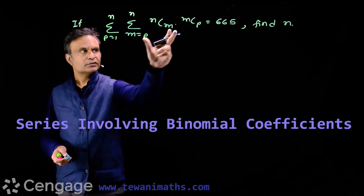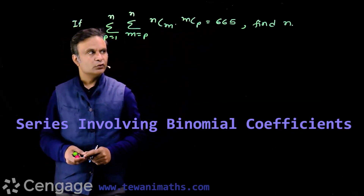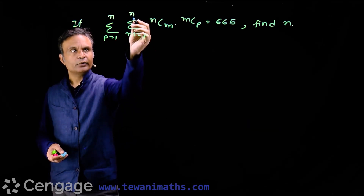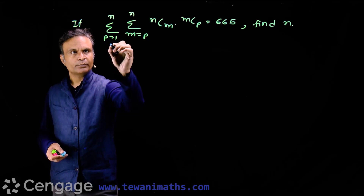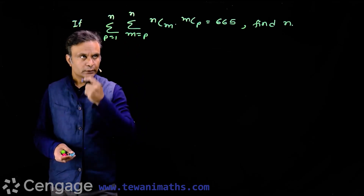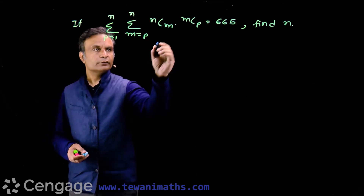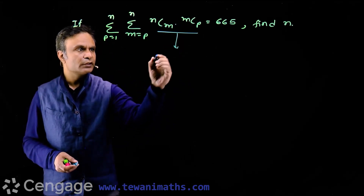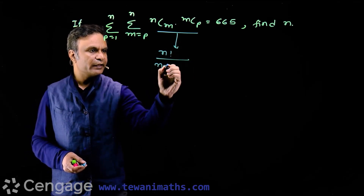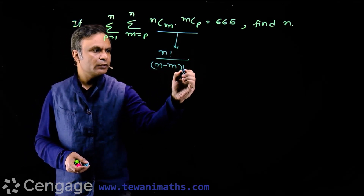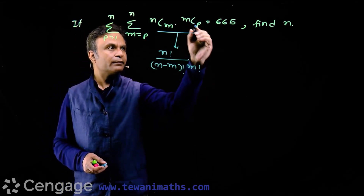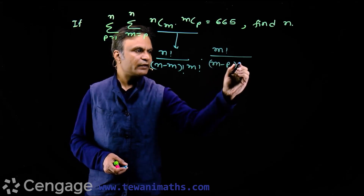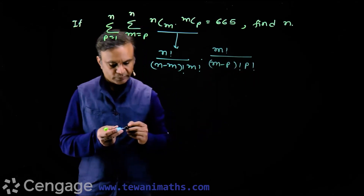We have this question: if this sigma is 665, find the value of n. Here we have first sigma for m equal to p to n, then sigma for p equal to 1 to n. First we simplify this term by expanding both binomial coefficients. We have n factorial divided by (n minus m) factorial multiplied by m factorial, multiplied by mCp which is m factorial over (m minus p) factorial multiplied by p factorial.